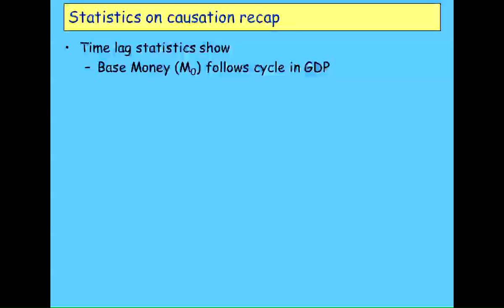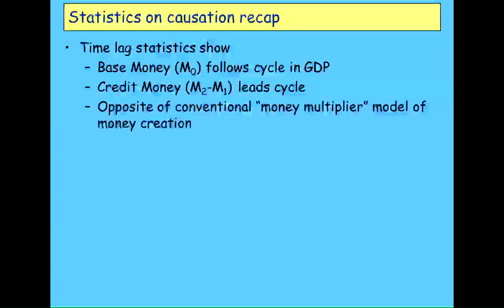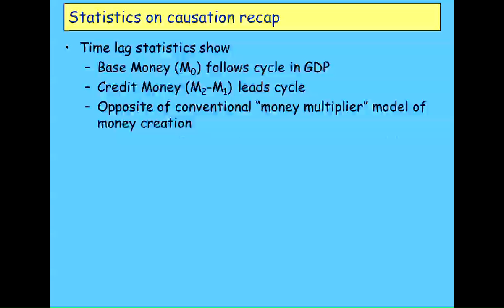They made statistical arguments that contradict the money multiplier theory of how money is created. Base money follows the cycle, credit money leads it — the opposite of the conventional model.